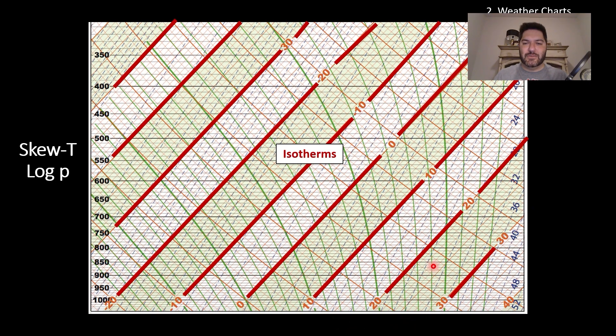These are your isotherms in red. This represents temperature. Again, Skew-T - these are moving from lower left to upper right. Kind of a weird way to look at temperature, but you get used to it after a little while.